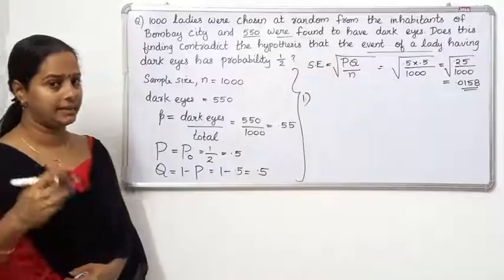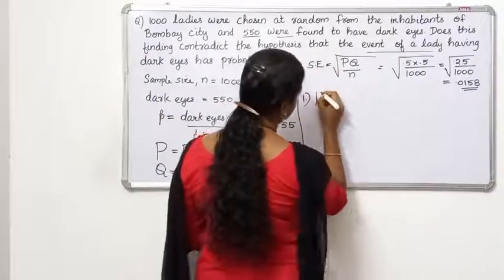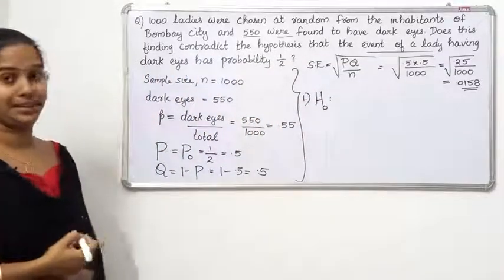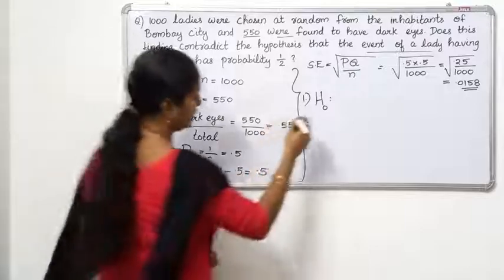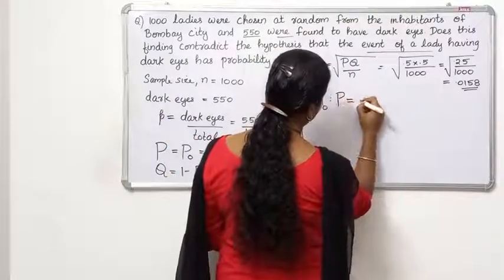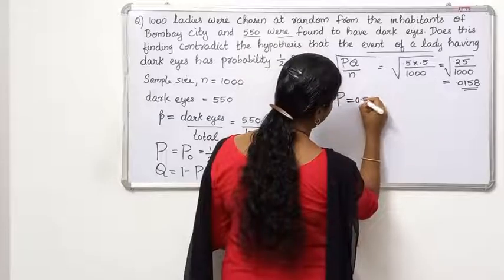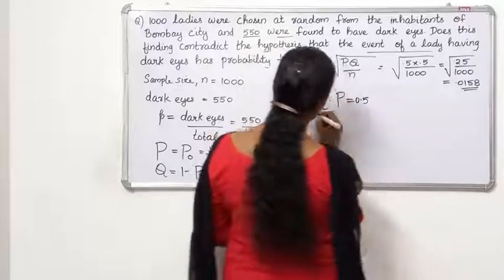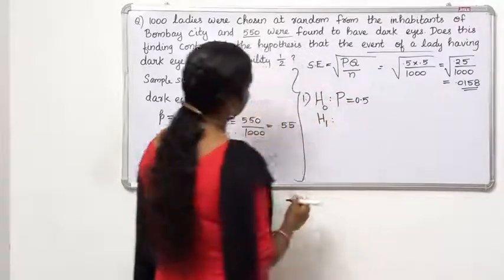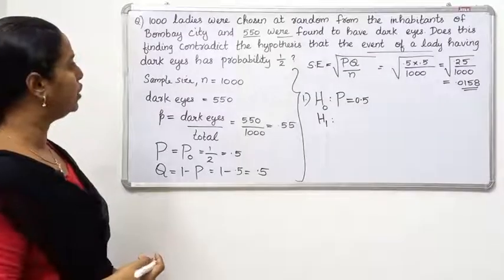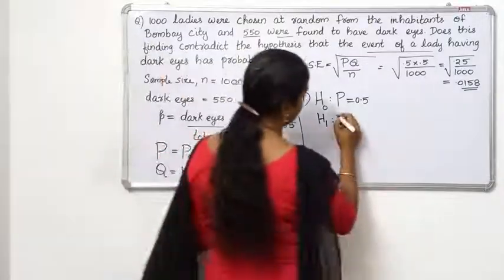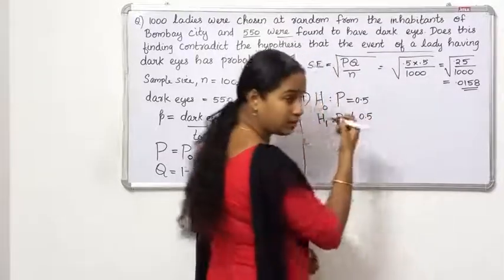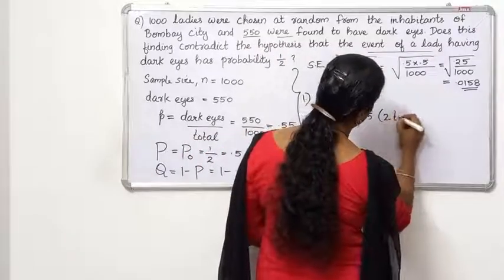Now let's set up the hypotheses. The null hypothesis H0 is p equal to p0 equal to 0.5. The alternative hypothesis H1 is p not equal to 1 by 2, making this a two-tailed test.